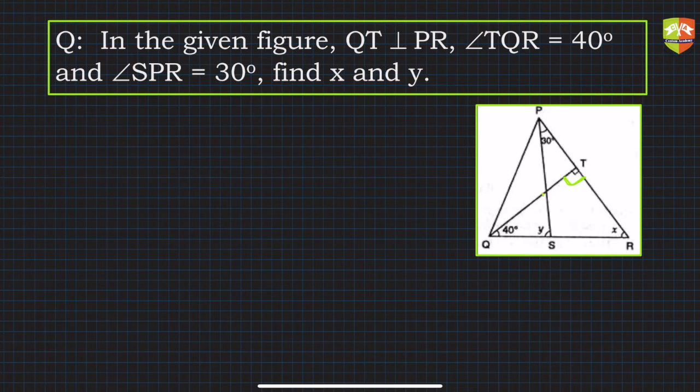And what else? Angle TQR is 40 degrees, so you can see TQR is 40 degrees here. And angle SPR is 30 degrees. So this is 30 degrees. We have to find out x and y.